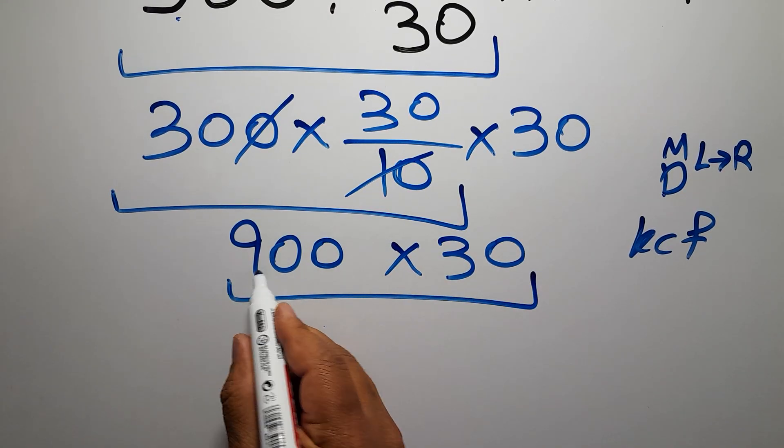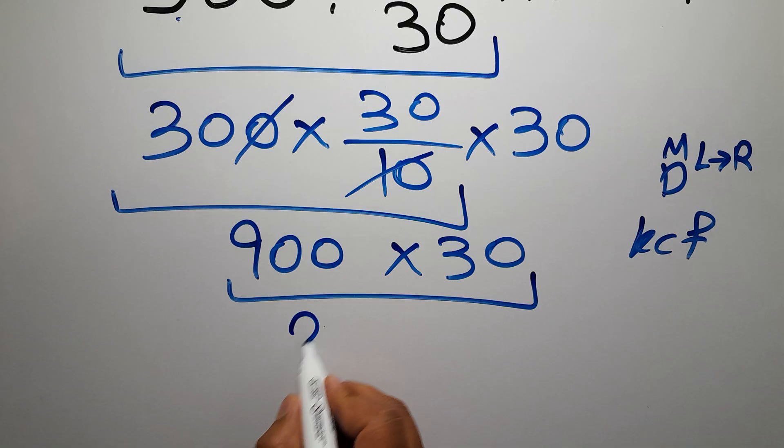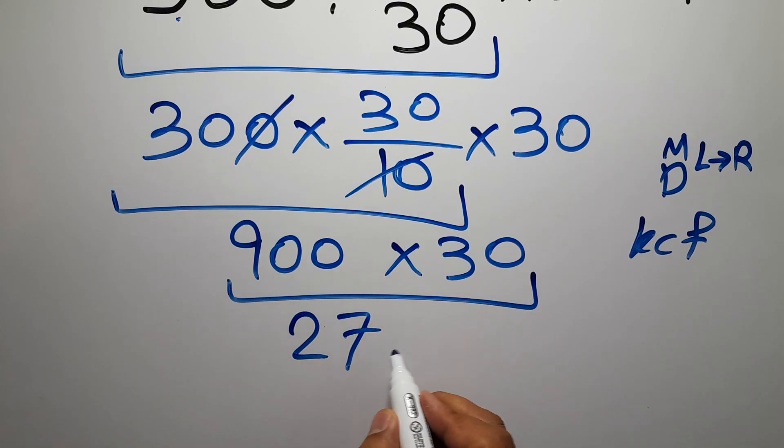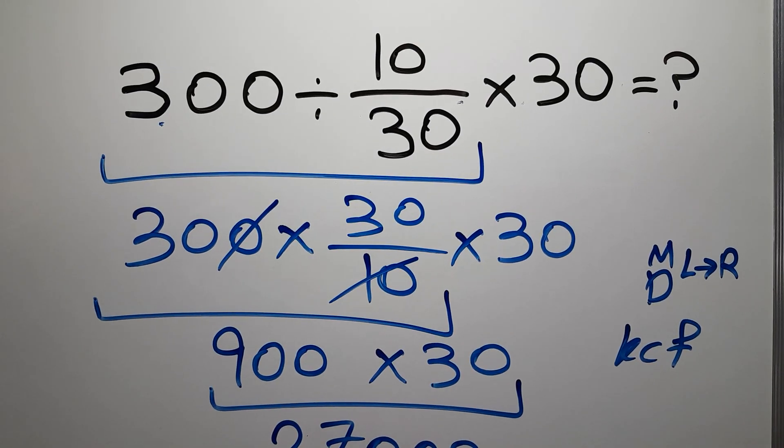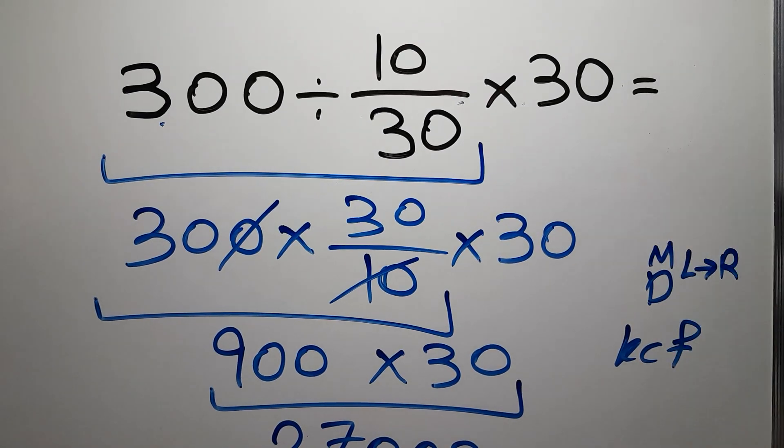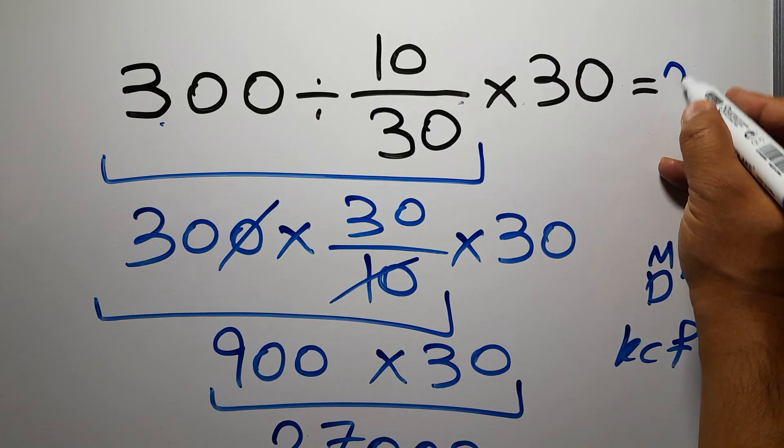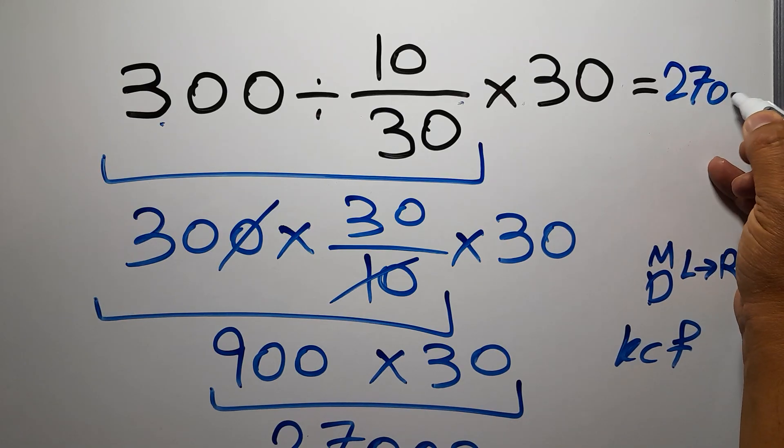9 times 3 gives us 27, and we have three zeros, so we have 27,000, and this is our final answer. The correct answer is 27,000.